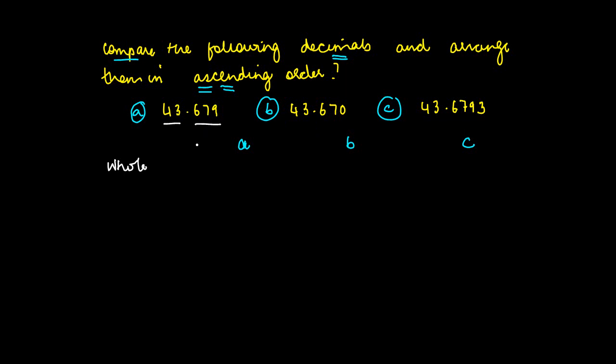Every decimal number is divided into two parts: the whole part and the decimal part. The whole number part of a is 43, for b also it is 43, and for c again it is 43. So does this help us make a decision? The answer is no.